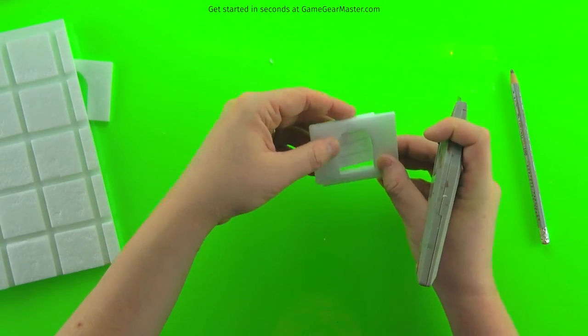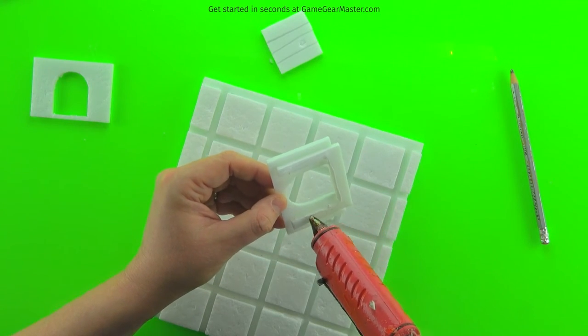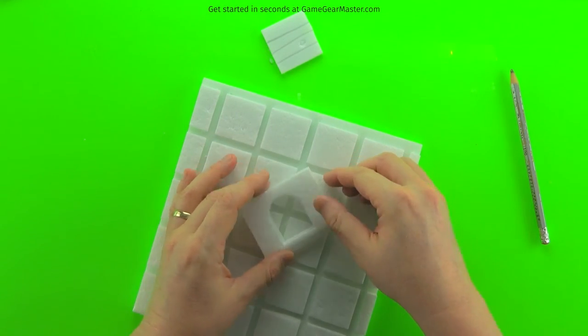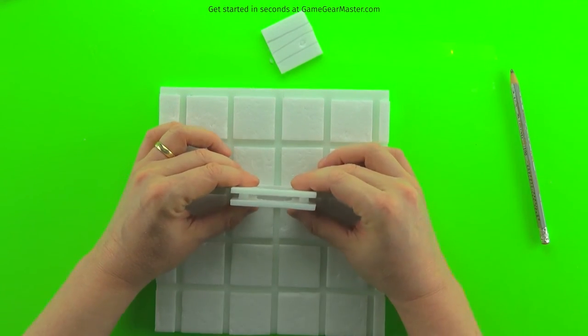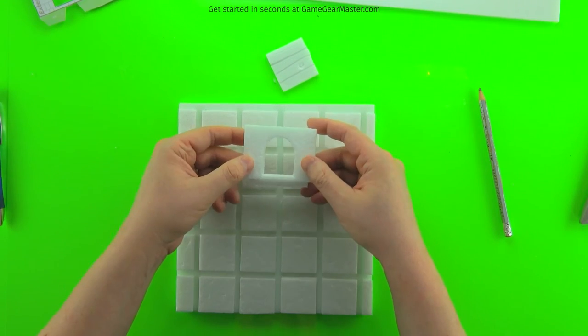Now you can also do a little test fit of your door. It looks pretty good. And then it's just adding some hot glue, putting the wall on, making sure it's positioned correctly left to right, and you're done. All set for paint.